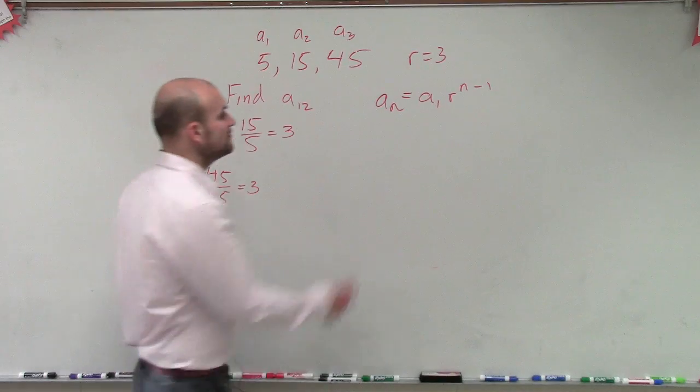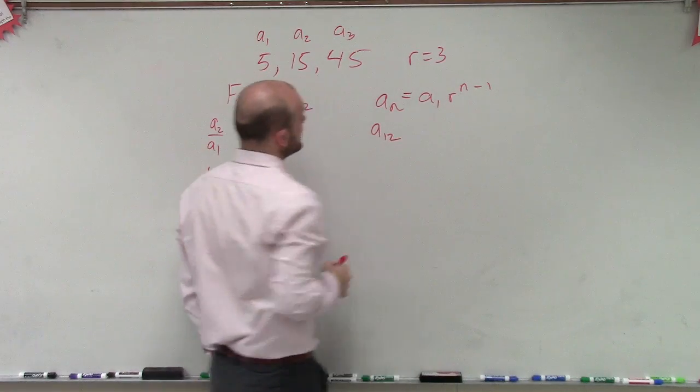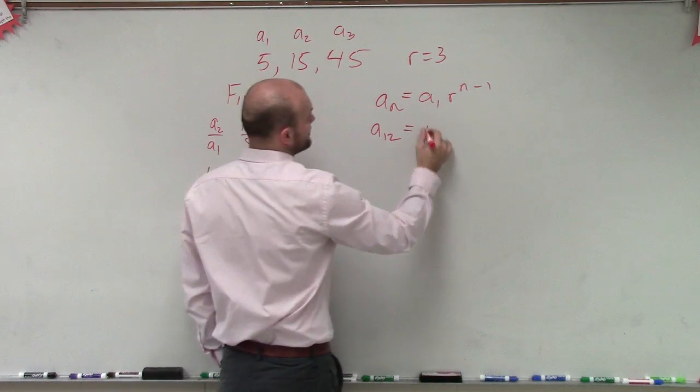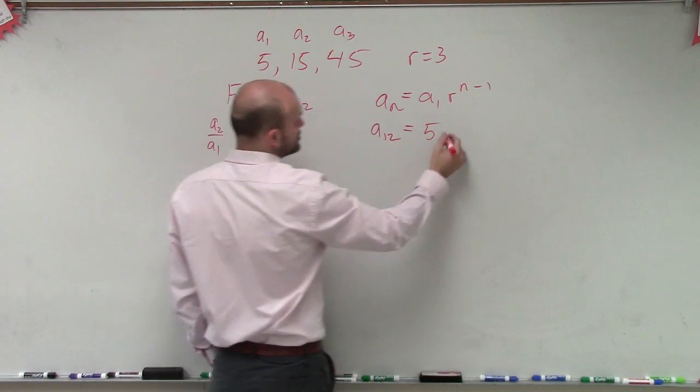So if I want to find a_12—not yet, we're going to get to those—so if I want to find a_12, we plug in a_1, which is 5, times our r, which is 3, raised to that 12 minus 1.